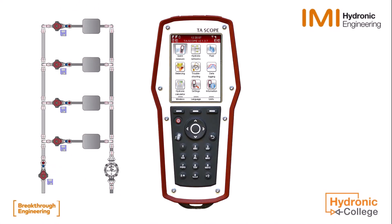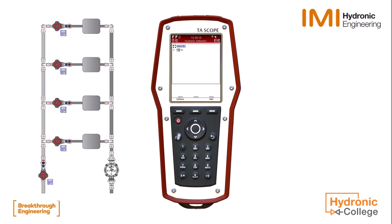Navigate to the hydronic menu on the TA Scope. Select the network you wish to run pump optimization on. We can see this network has been previously balanced due to the save icon against each valve.